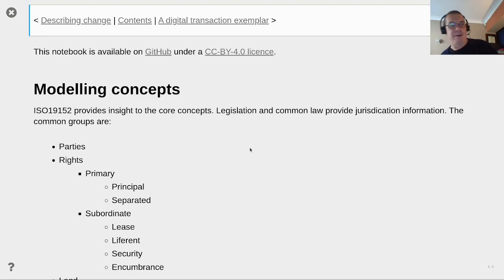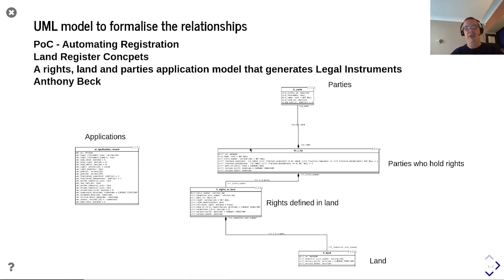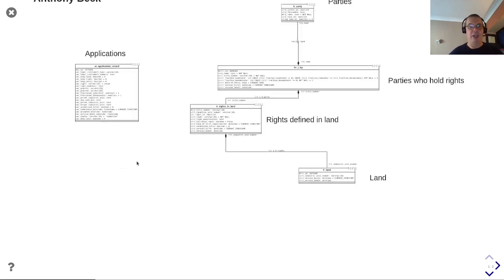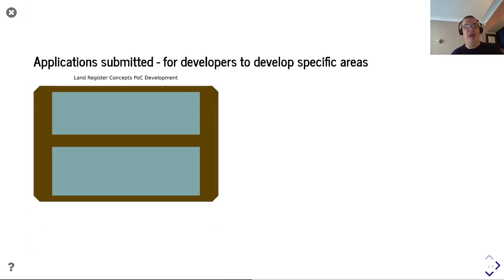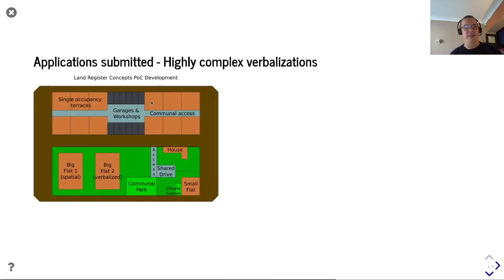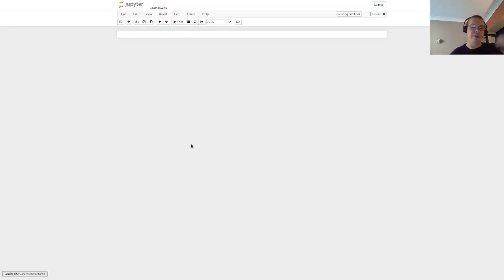We've now provided substantial background on modeling concepts - parties, rights (primary and subordinate), and a whole raft of different elements. We'll now get into the meat of this presentation: dealing with this in an automated way. We have a UML model with parties, parties who hold rights, rights defined in land, and an application table - a five-table UML model. We've defined a conceptual approach where we start with a block of land owned by a regional development agency, with applications submitted for developers for specific areas, ultimately including terraces, garages, communal access, and flats, pulling together all the deeds to make the transaction work using all the primitives discussed.